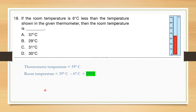Question number 18: If the room temperature is 6 degrees less than the temperature shown in the given thermometer, then what is the room temperature? The thermometer shows 35 degrees and 6 less than 35 is 29. So the correct answer is option B, 29 degrees.